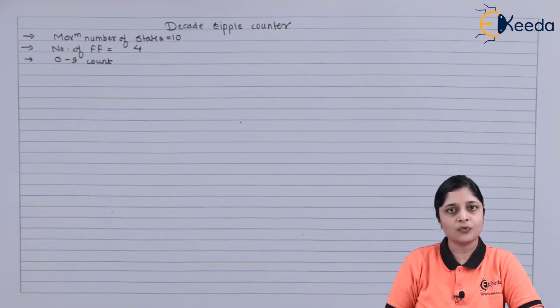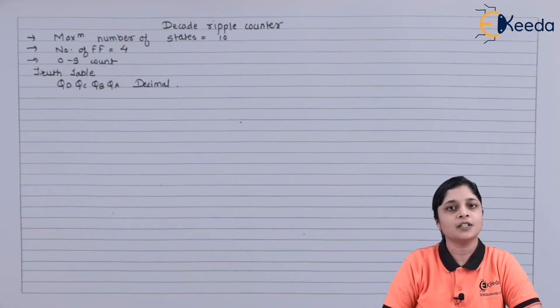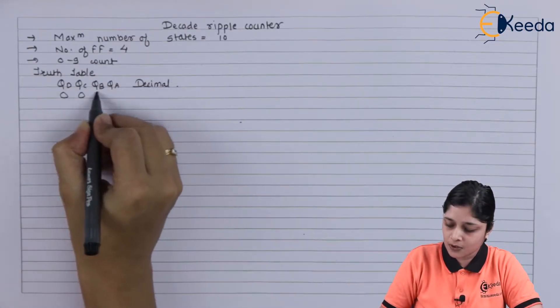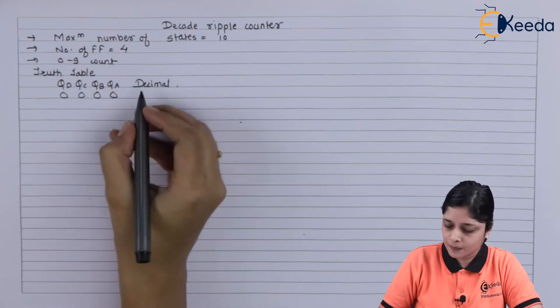So with the use of the logical diagram and the truth table, you have to design the decade counter, and specifically a ripple counter. So we will start with the truth table. So for 0000 we